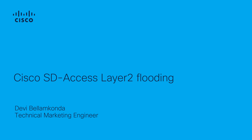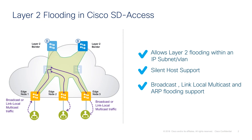Today in this video we're going to see why we need layer 2 flooding in SD-Access fabric and how to enable it. The SD-Access fabric provides many optimizations to improve unicast traffic flows and to reduce unnecessary flooding of data inside the fabric, and one of the optimizations is ARP suppression.